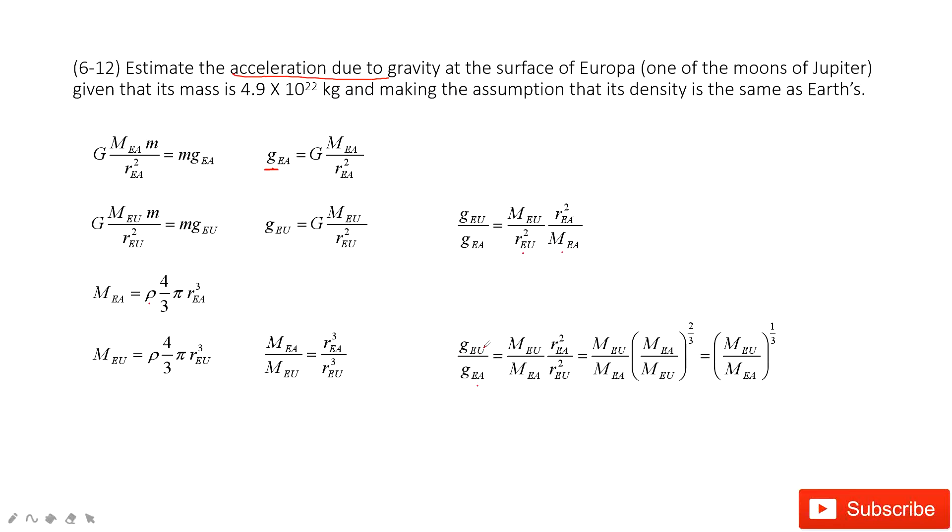This problem is not so difficult. First, you must be very familiar with how to find this acceleration due to gravity. So we consider the gravitational force equals mass times this acceleration in both cases. So you find this ratio, right?